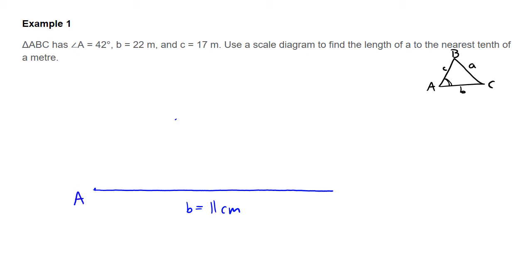This side that goes from A up from this side is side length C, which we're told was 17 meters or 8.5 centimeters on my page. So now my ruler, I'm going to measure out 8.5 centimeters, but it has to go through that angle that I just made a mark for. So that's side C equals 8.5 centimeters.